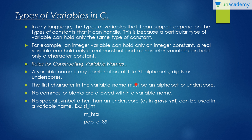Let's study the rules for constructing variable names. A variable name is any combination of 1 to 31 alphabets, digits, or underscores. The first character in the variable name must be an alphabet or underscore — not a number or any special symbol. No commas or blanks are allowed within a variable name, and no special symbol other than an underscore can be used.